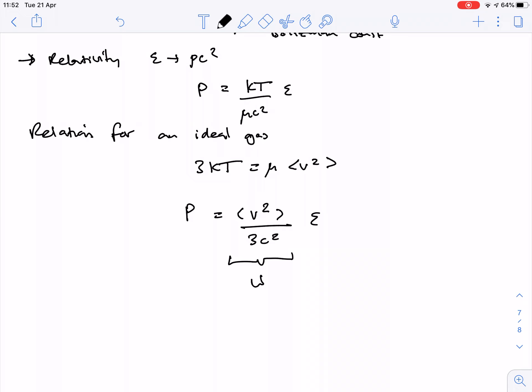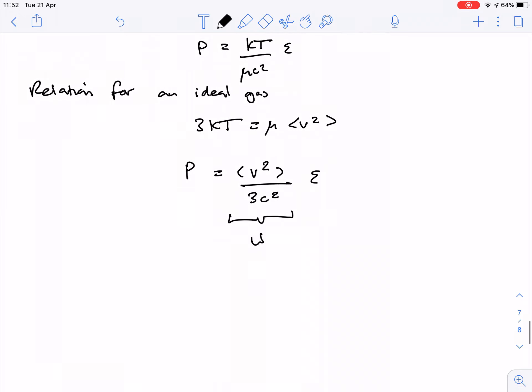And then you can look at some examples. So what about for a universe which consists of relativistic particles? Neutrinos, or even photons, for that matter, which move at the speed of light. So if v is of order c, then p equals one third e, and w equals one third.